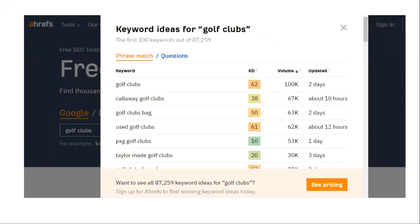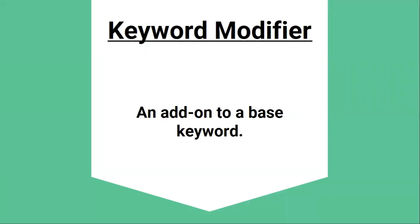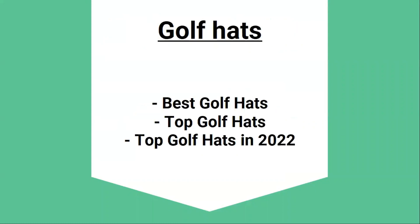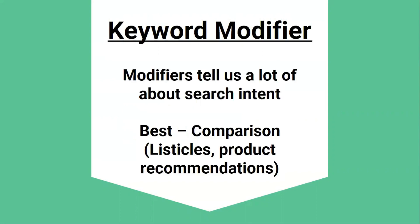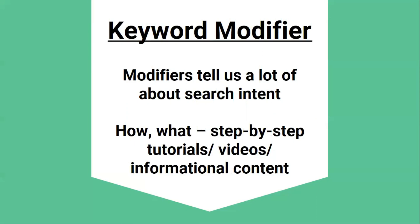Checking the SERP for all these keywords would be pretty time consuming, so there's a quick technique you can use to find relevant keywords — keyword modifiers. A modifier is an add-on to a base keyword. For example, if our base keyword is 'golf hats,' we can modify this keyword by adding 'best,' 'top,' or the current year. Modifiers tell us a lot about search intent. A word like 'best' tells us that a comparison needs to be made, so searchers are probably looking for listicle blog posts with various product recommendations. If a word like 'how' or 'what' is in the keyword, then the top pages will likely be blog posts or videos with step-by-step tutorials or other informational content.